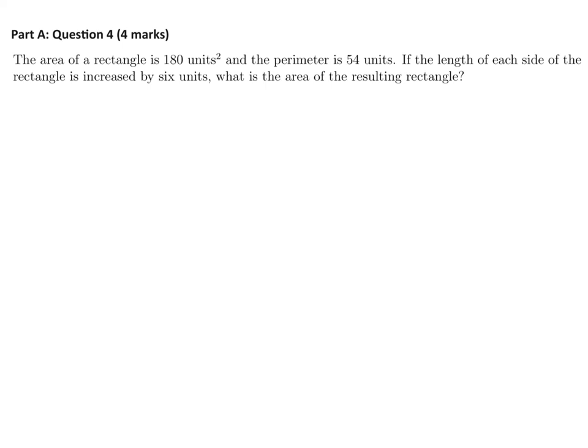The area of a rectangle is 180 units squared, and the perimeter is 54. If the length of each side of the rectangle is increased by six units, what is the area of the resulting rectangle? Alright, so we've got one rectangle, and initially they tell me that the area is 180. Now I don't know the sides, so I'll just call the sides A and B. And they tell me that the perimeter is 54. So that means that 2A plus 2B is 54. And then I can divide through by two to get A plus B is 27.